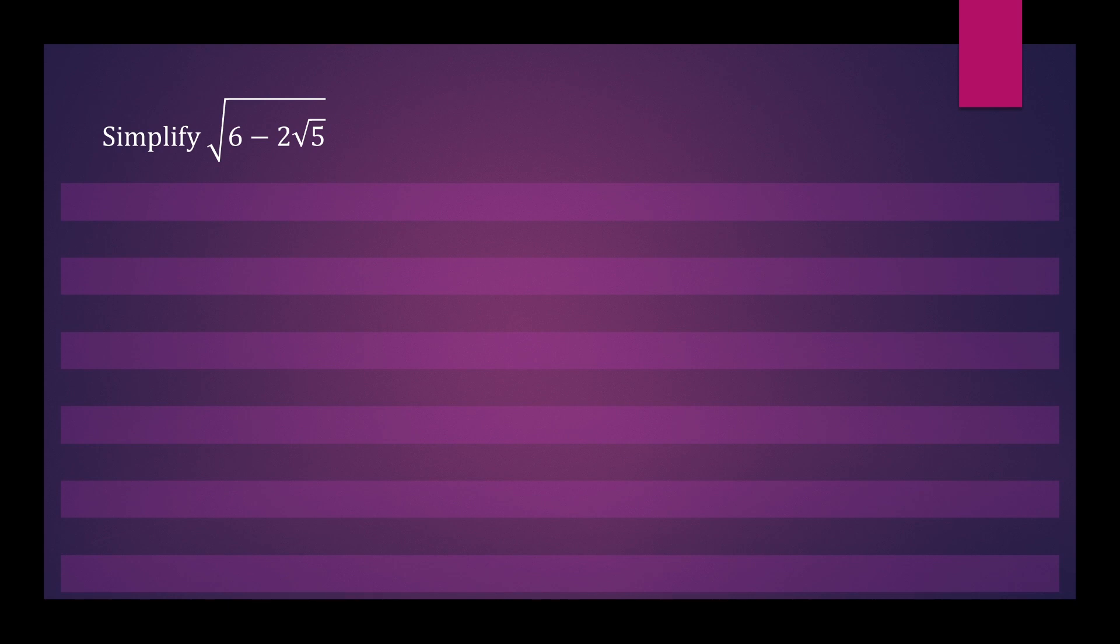In this question, we want to simplify the square root of 6 minus 2 times root 5. Any question that's written in the form the square root of x minus 2 root y can be simplified to the form square root a minus square root b.